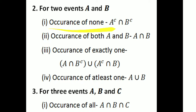Occurrence of both A and B is represented by A complement intersection B complement. Then occurrence of exactly one is A intersection B complement union A complement intersection B. Then occurrence of at least one is A union B.